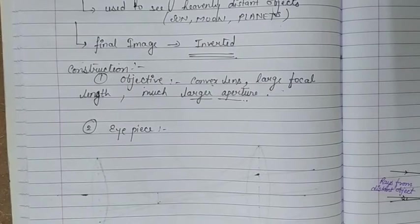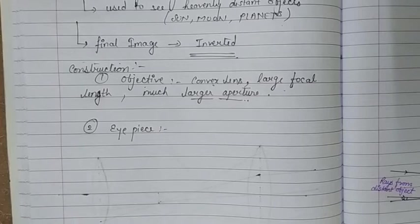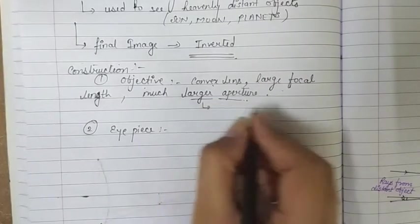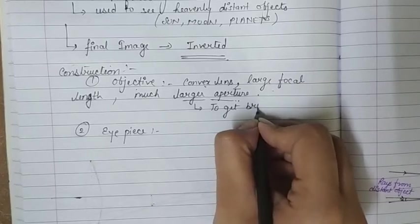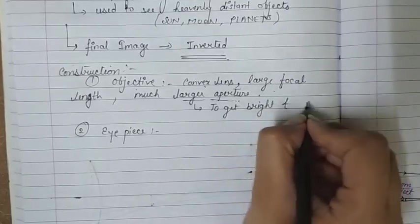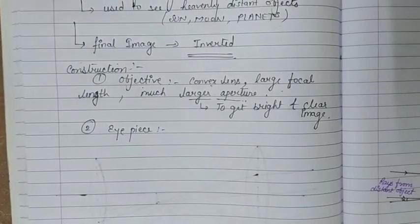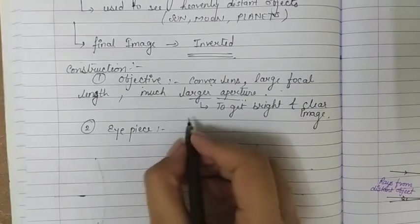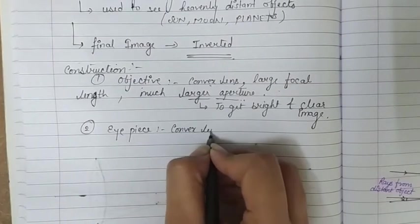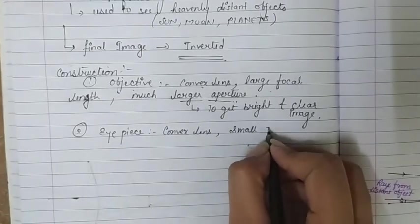The reason for using a larger aperture is that the light rays coming from the object are captured by this lens in sufficient amount so as to get a brighter and clear image. The second lens is the eyepiece, which is towards the observer's eye. It is again a converging or convex lens, but this time of small focal length.